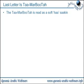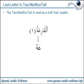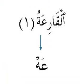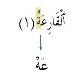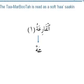The next rule is: if the word you're stopping on ends with a tamarbootah, you change the tamarbootah into a haa sakin — the soft haa from the bottom of the throat. For example, the word 'al-qari'atu': when stopping, that tamarbootah at the end is read as a haa sakin, so it becomes 'al-qari'ah.' You have to bring out a tiny bit of haa sound from the bottom of your throat. This requires a lot of practice and you need to sit with a reciter to get it exactly right.